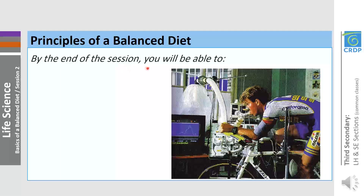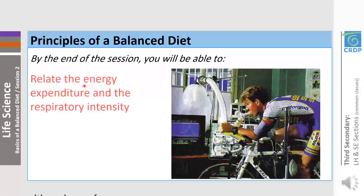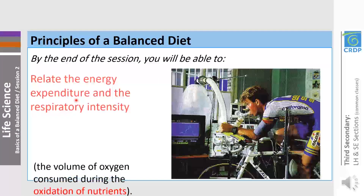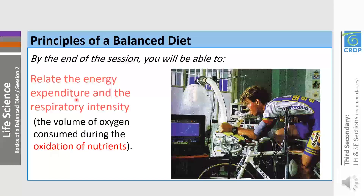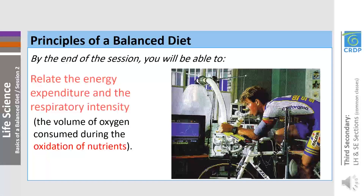By the end of the session, you will be able to find the relation between the energy expenditure for a specific activity — sedentary, moderate activity, light activity for an athlete — and the respiratory intensity, which represents the volume of oxygen consumed during the oxidation reactions of nutrients: carbohydrates, proteins, and lipids. These oxidation reactions provide energy necessary for all the body functions: digestion, respiration, physical activities, and so on.